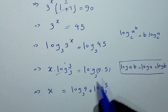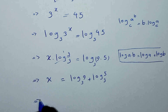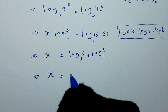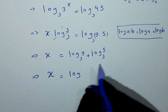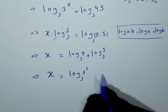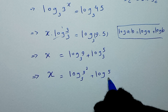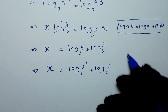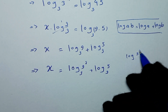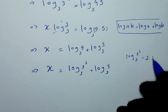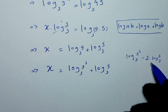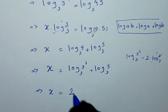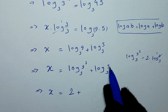Applying the log power rule: log of 9 to base 3 is log of 3 to the power of 2 to base 3, which equals 2 times log of 3 to base 3. Since log of 3 to base 3 is 1, this simplifies to 2. Therefore x is equal to 2 plus log of 5 to base 3.